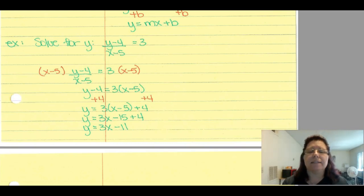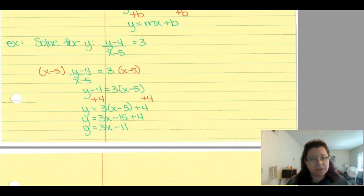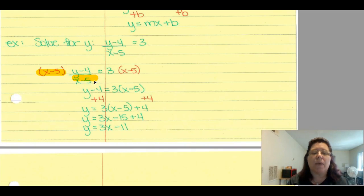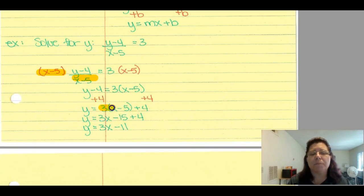Solve for y in (y - 4) / (x - 5) = 3. The entire left side is divided by (x - 5), so multiply both sides by (x - 5): y - 4 = 3(x - 5). Add 4 to both sides: y = 3(x - 5) + 4. Distribute the 3 and combine like terms: y = 3x - 15 + 4 = 3x - 11. Always simplify to the furthest step.